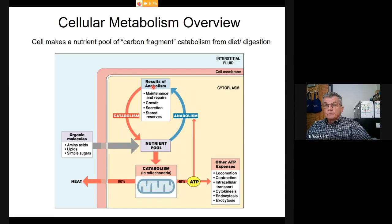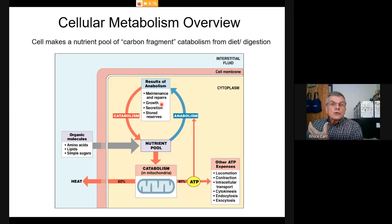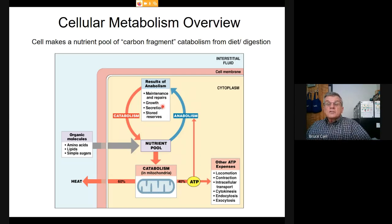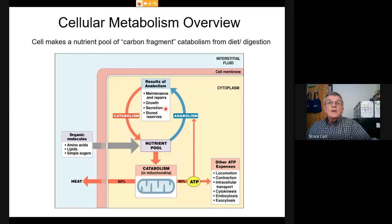ATP is also connected to anabolism: anytime you're taking monomers and building them into polymers you're using energy in the cytoplasm. We have to maintain and repair the cell—that takes ATP. Growth requires ATP. Whenever we secrete from a cell—whether an organ like the gallbladder secretes bile, or individual cells like goblet cells perform secretion—that requires ATP.